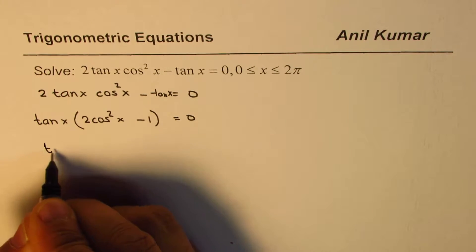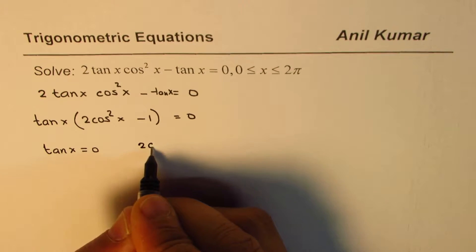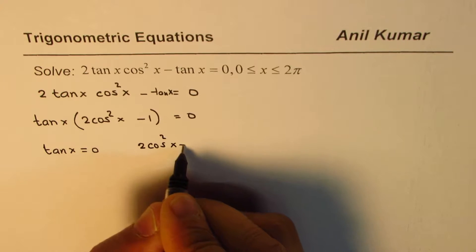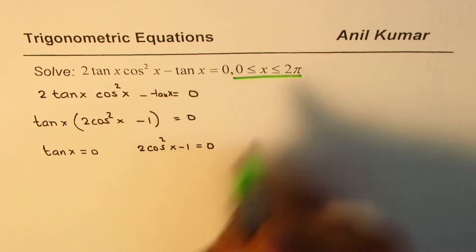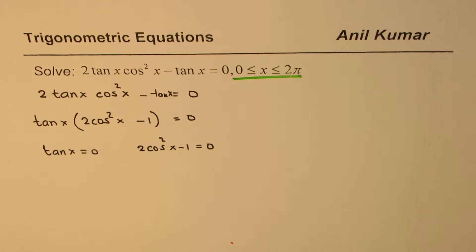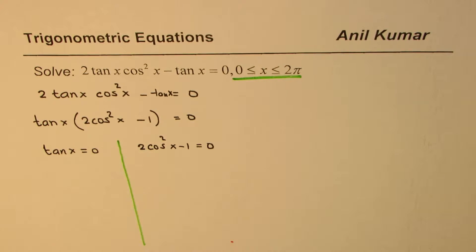When you have two factors multiplied giving 0, that means we have two different solutions. One is for tan x equals 0, the other one is for 2 cos²x minus 1 equals 0. We're looking in the domain 0 to 2π, so we have to write all possible solutions in this particular domain.